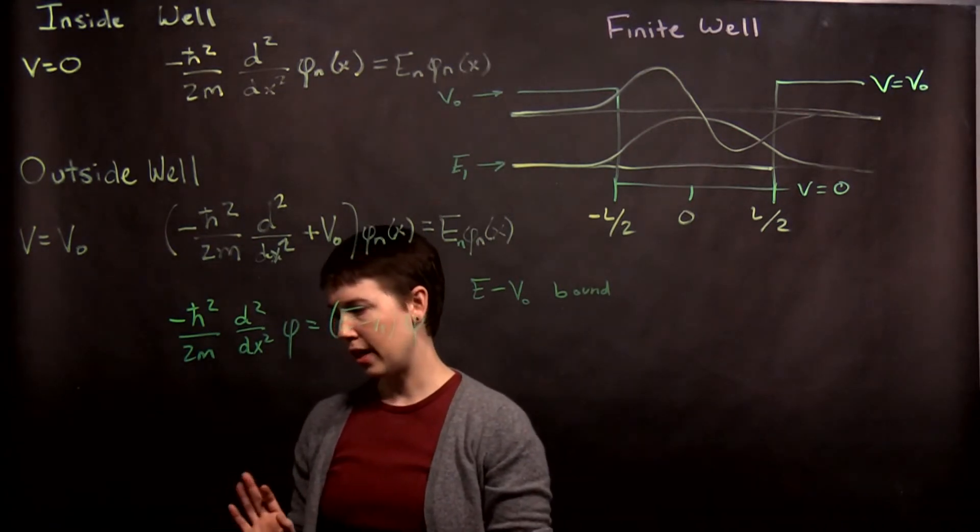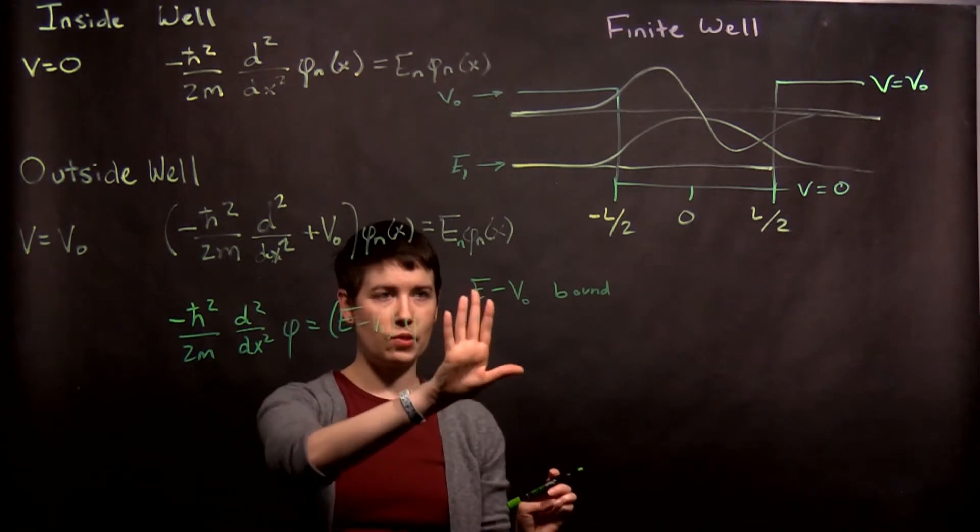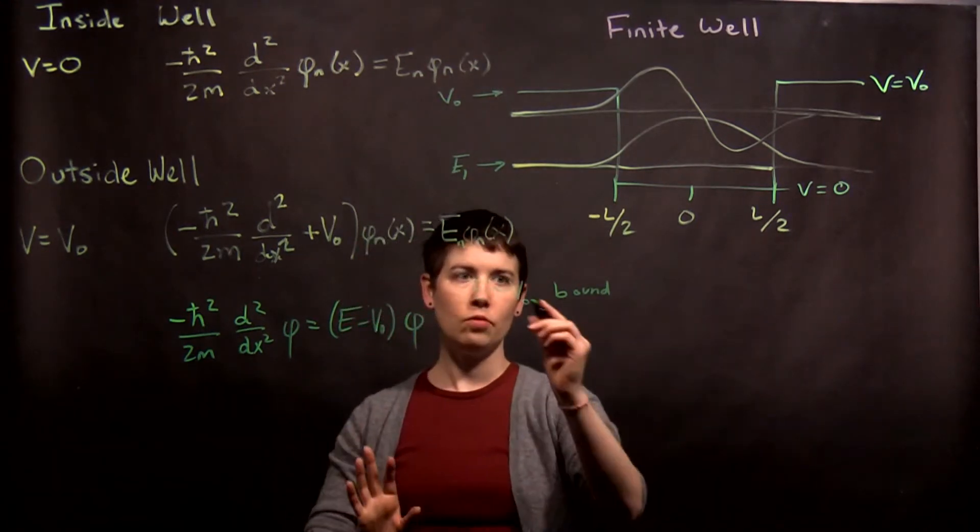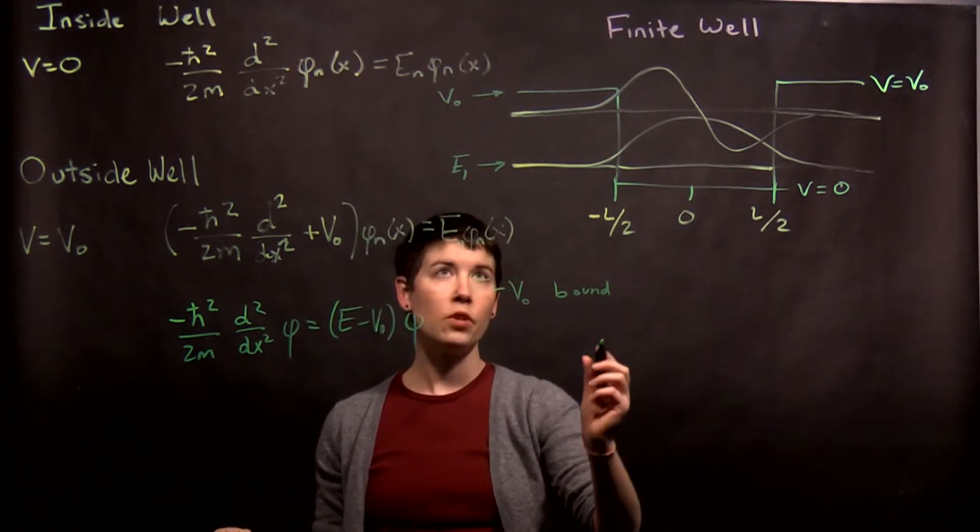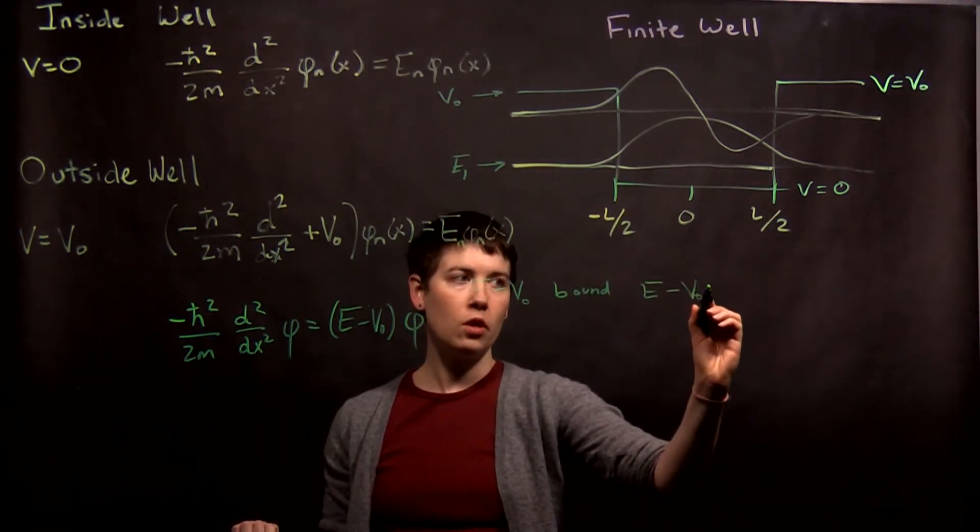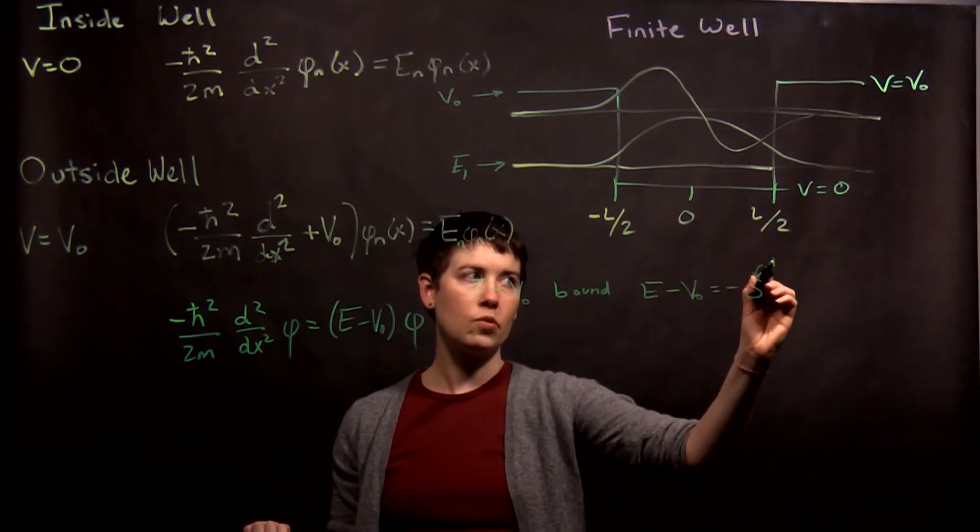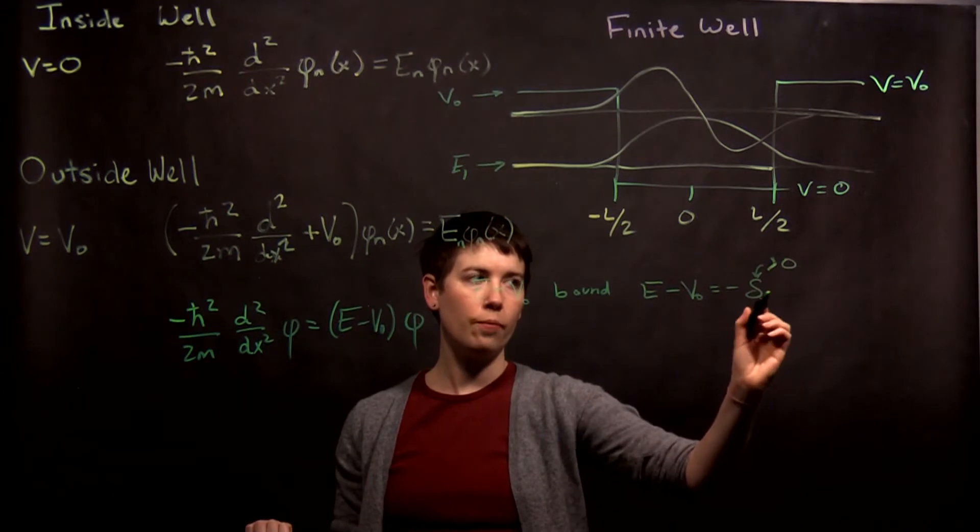So this is kind of important. Let's say that since that, for a bound state, that's going to be a negative number, let's say that E minus V naught, for now, is going to be equal to negative delta. So this then becomes a number which is greater than zero.